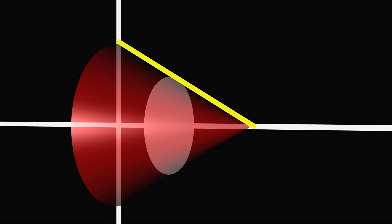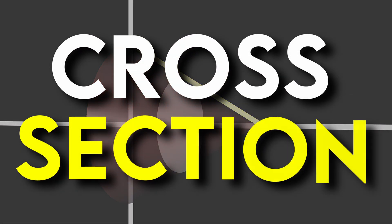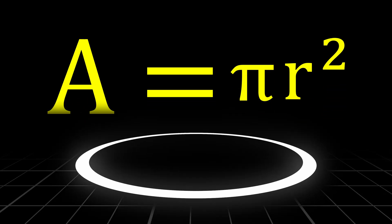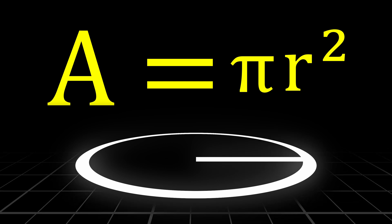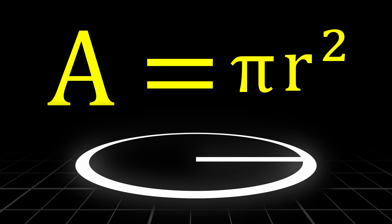To do this, we need to continuously evaluate the area of each circular cross-section, which, using the formula for the area of a circle, is pi r squared, or in this case, pi y squared.